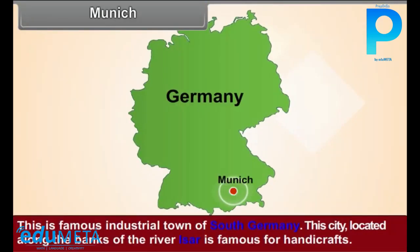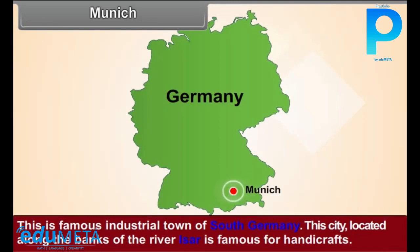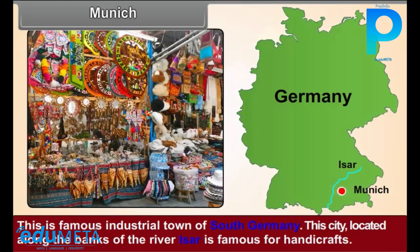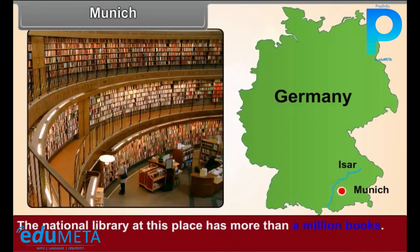Munich. This is a famous industrial town of South Germany. This city, located along the banks of the river Isar, is famous for handicrafts. The National Library at this place has more than a million books.